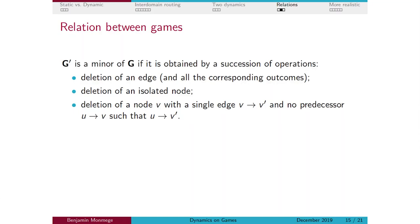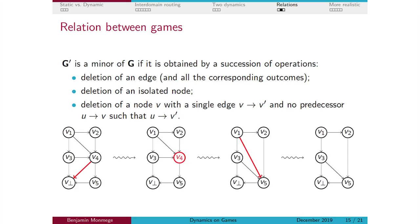The non-folklore part uses the classical notion of minors in graphs, adapted to games — which requires a bit more care. We say a game G' is a minor of another game G if G' can be obtained from G by a succession of operations resembling graph minors: deletion of an edge; if a node becomes isolated, you can remove it; and you can remove a non-isolated node in a particular case, which I'll show on an example.